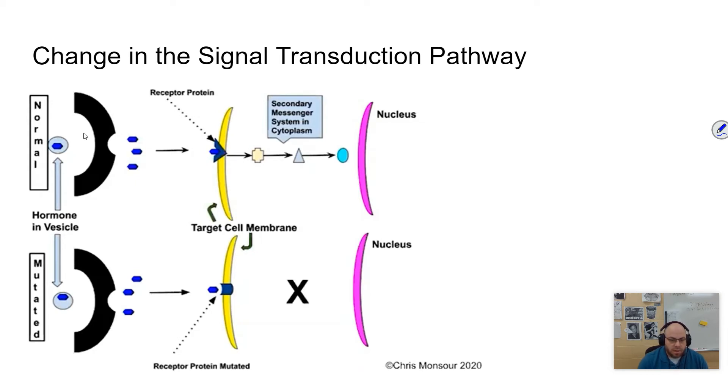There's some sort of signal sent out. These little blue shapes come out, received. There's the transduction, boom, boom, boom. Cellular response occurs in the nucleus where the DNA is, protein is made.